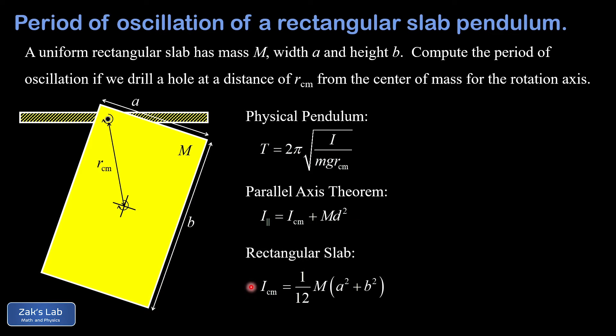Finally, in the previous video we derived the moment of inertia of a rectangular slab rotating about its center of mass, about an axis perpendicular to the plane of the slab, and that turned out to be (1/12)·m·(a² + b²), where a and b are the width and height of the slab.